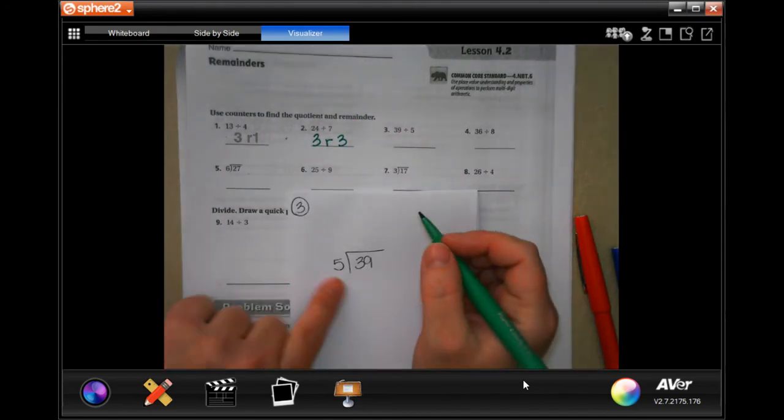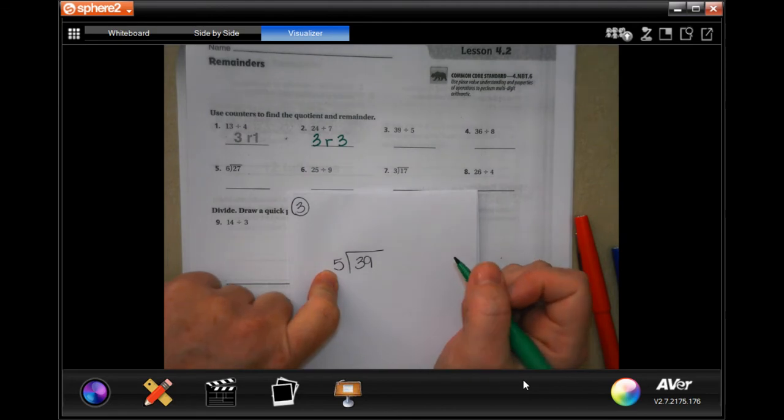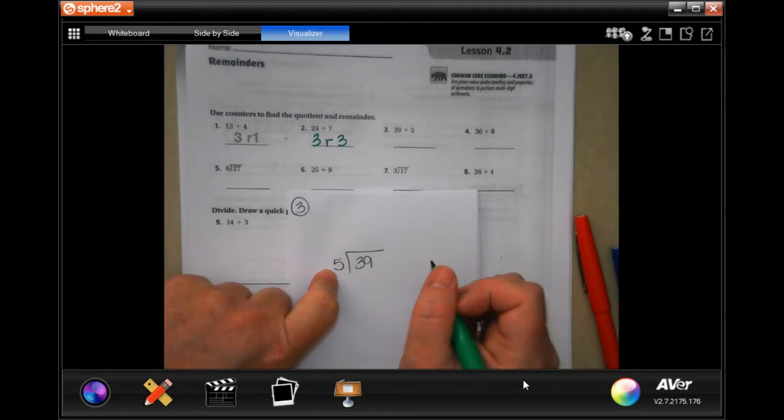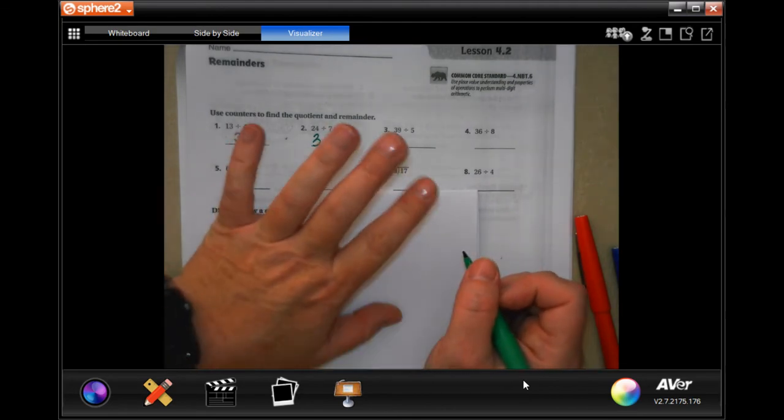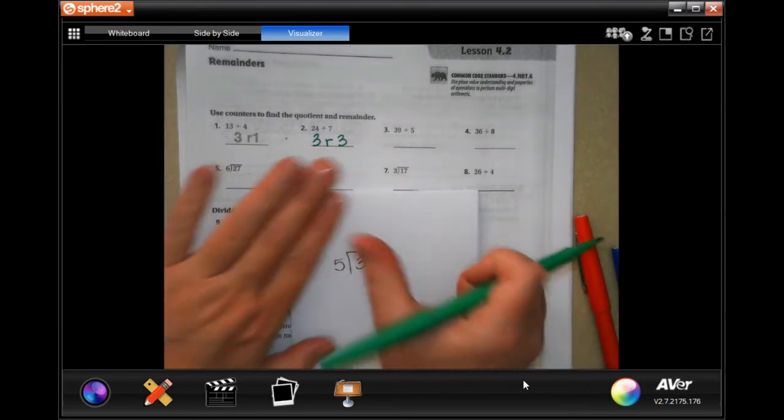Okay, we do another one. I'm not gonna write down my multiples of five because you guys definitely know those by now. So I'm just gonna go five, ten, fifteen, twenty, twenty-five, thirty.